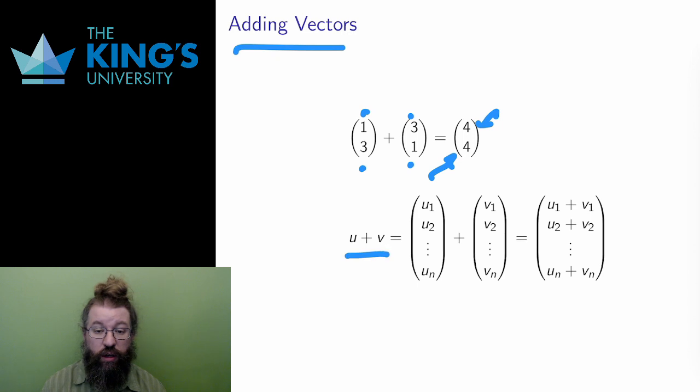To write this in general, for any Rn, I write two vectors u and v as components. u has components u1, u2, and so on up to un. v also has components v1, v2, and up to vn. These symbols—u1, v2, all of them—are variables that stand for the numbers in the vector. It's very valuable to be able to write the vectors this way because they stand for any vector. Then I show how the addition works, adding in the first component, the second component, and so on to the end. Since u and v are written with variables generally, this shows how the addition works for any two vectors in Rn.